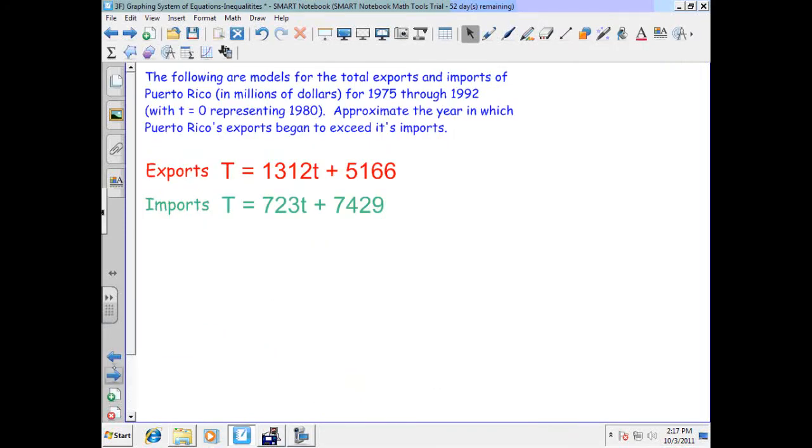Now let's say we had an application problem like we have here. We're finding our models of total exports and imports of Puerto Rico in millions of dollars. So we're going to use that as T. So that is our amount of product in millions of dollars for 1975 through 1992, where little t, that's my other variable, equals zero in 1980. So those are two key elements. There's my input, the year, and my output is the product that is generated as either import or export.